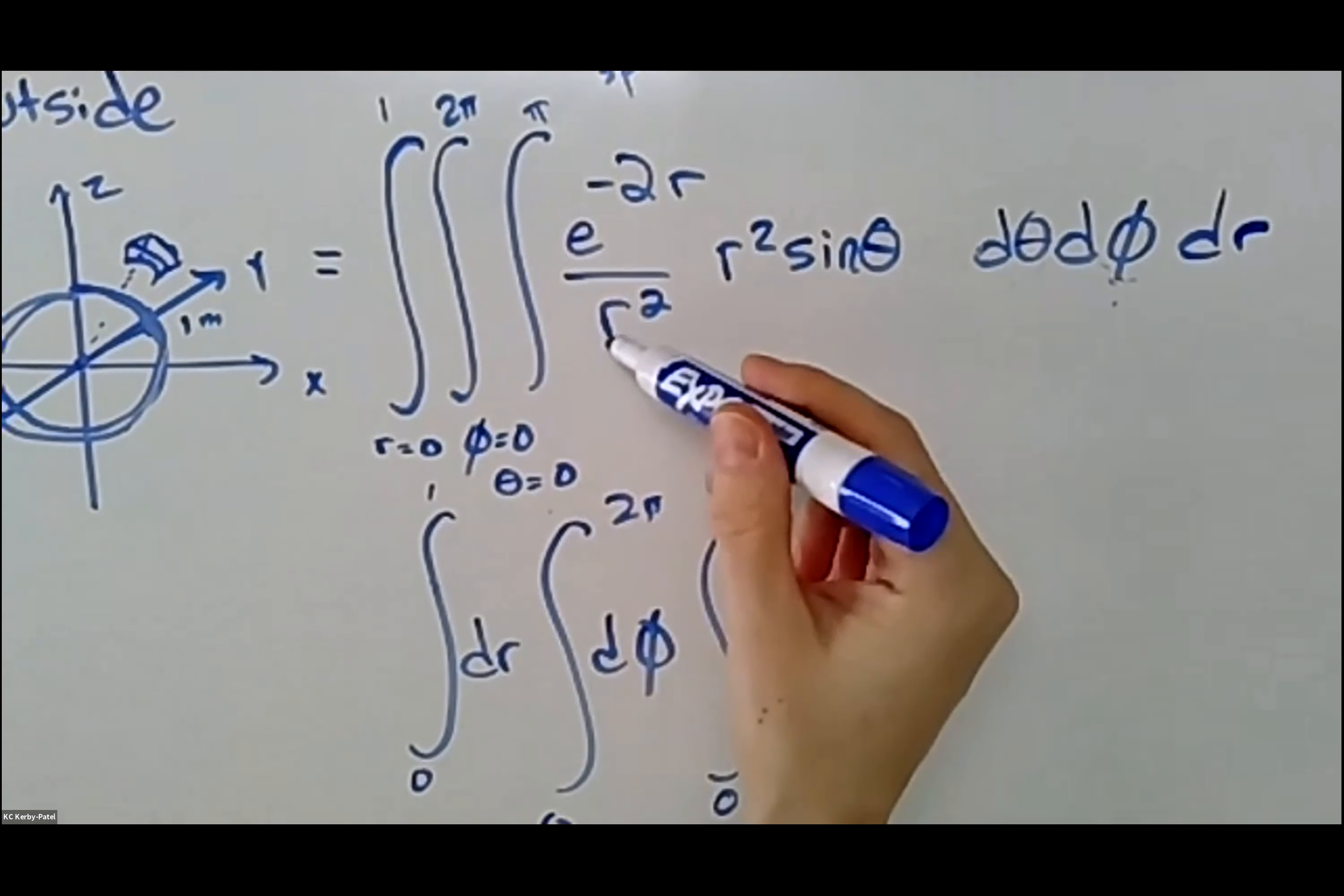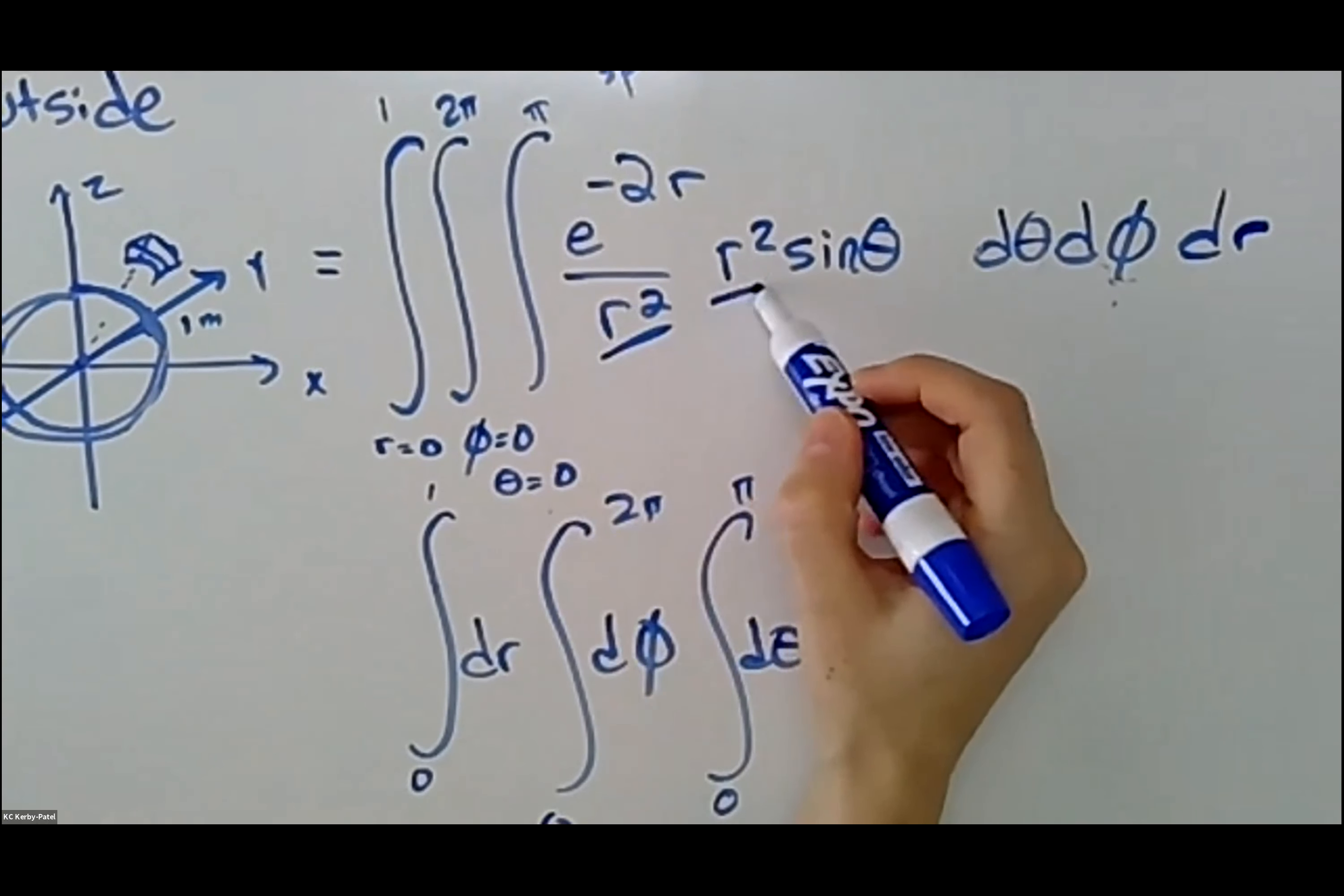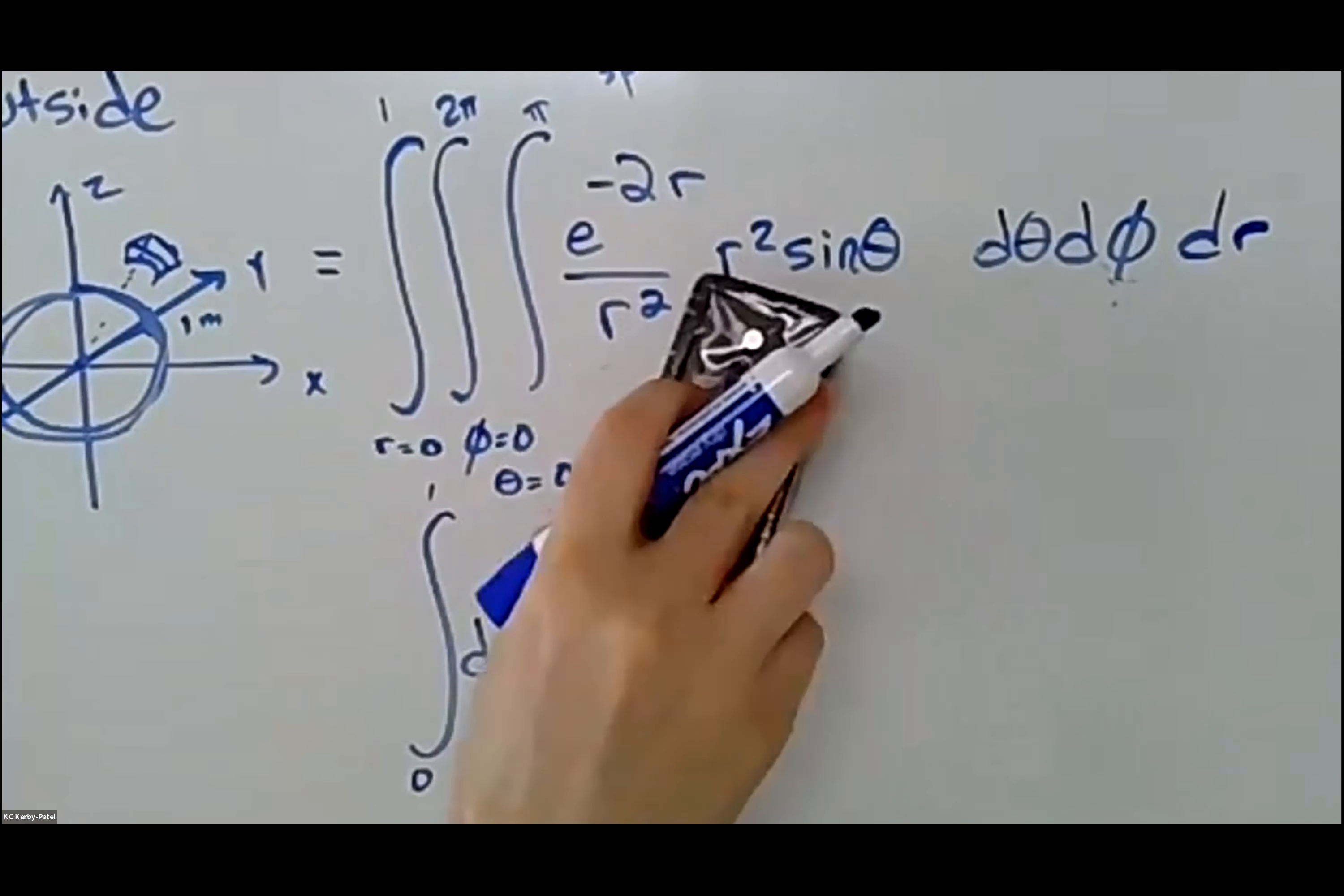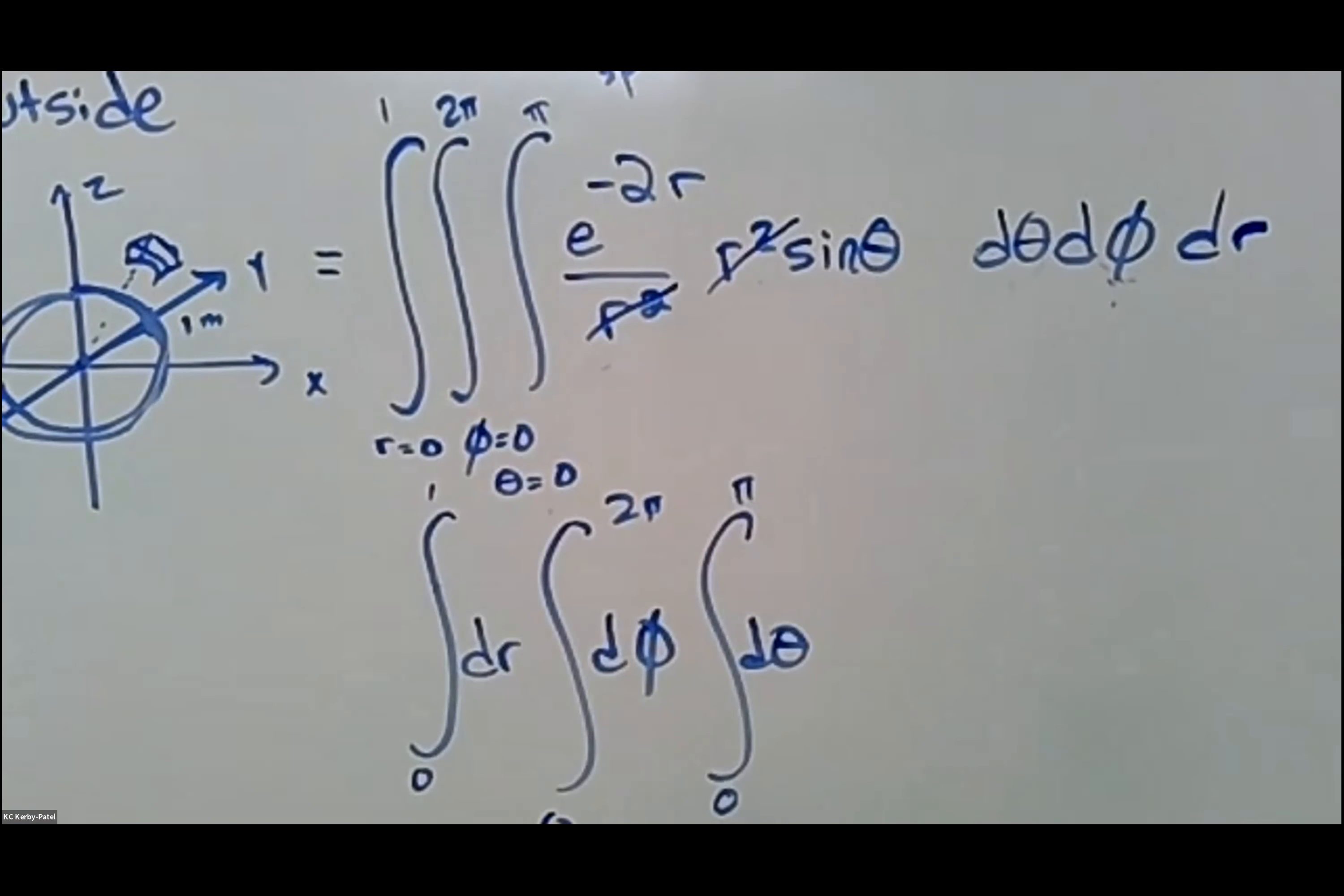I'm going to begin by simplifying what we have up here at the top. So this r² on the bottom cancels with the r² that we got from the differential volume element, almost as though I wrote this problem myself so that it would be easy to solve on Zoom. Then we have sin(θ) dθ dφ dr.